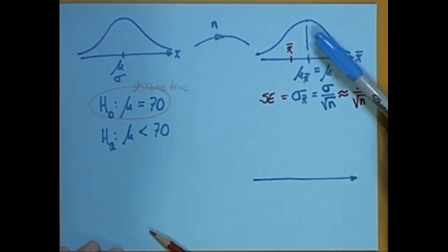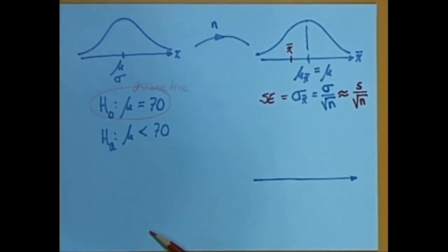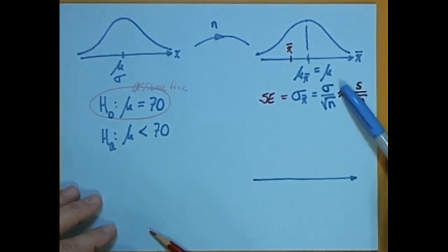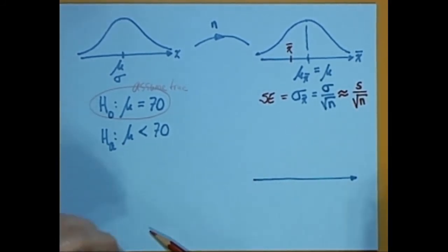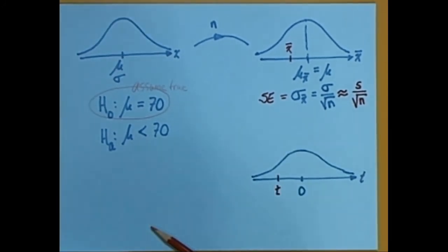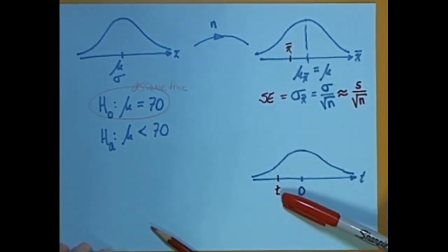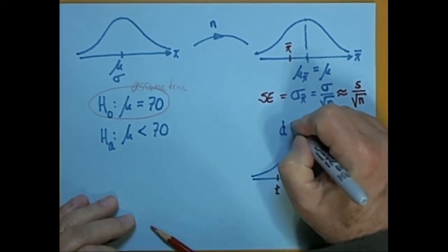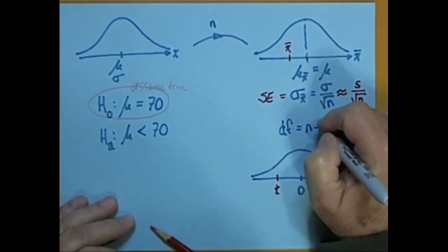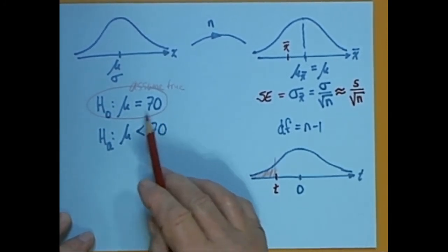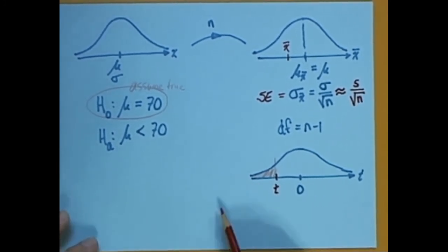We want to translate this to a standardized distribution, but we can't convert to a Z-score because we're using an approximation. So instead, we convert to a t-score using the t-distribution. The x-bar converts to a test statistic t. Since we're using a t-distribution, we need the degrees of freedom, which in this case is N minus 1. Because the alternative hypothesis is less than, we're doing a lower-tailed test.